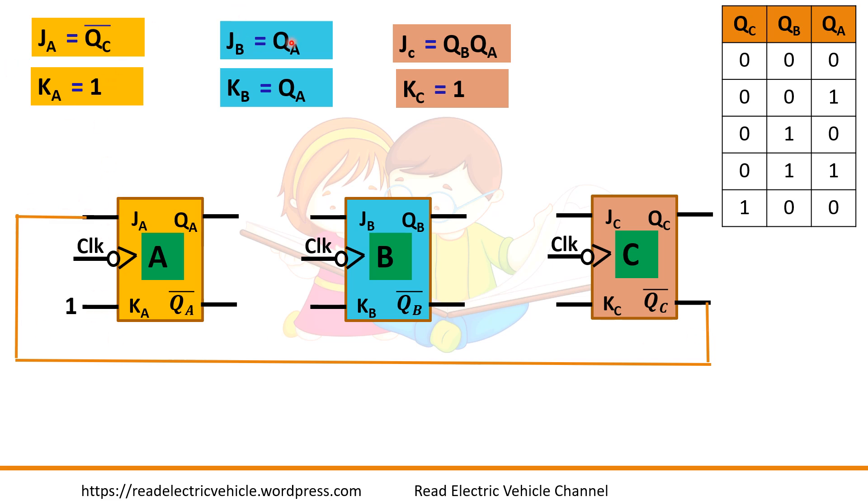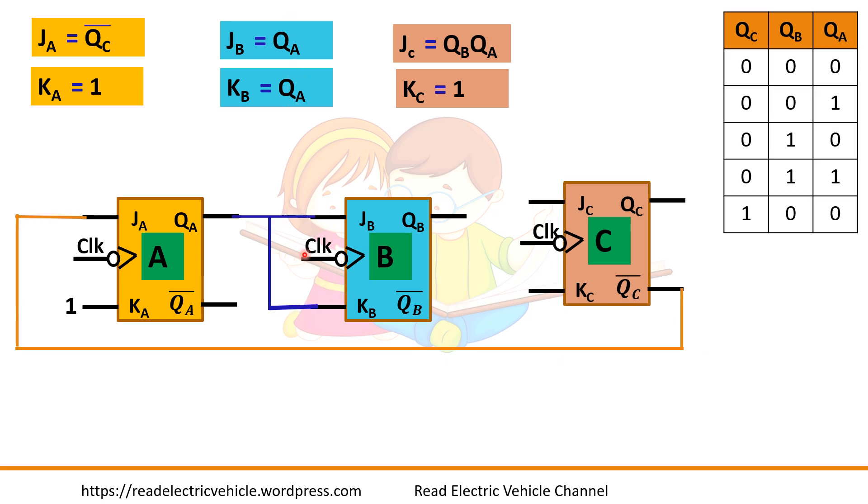Then JB and KB both are equal to QA, so we can connect and directly connect it to QA. Then here JC is equal to QB QA, so here AND operation is there. You need an AND gate here: QB QA that is connected to JC. And KC is equal to 1.